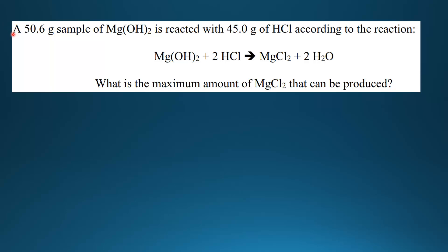Next we look at a real example. A 50.6 g sample of magnesium hydroxide is reacted with 45.0 g of hydrochloric acid according to the reaction: magnesium hydroxide plus hydrochloric acid makes magnesium chloride plus water. The question is: what is the maximum amount of magnesium chloride that can be produced?